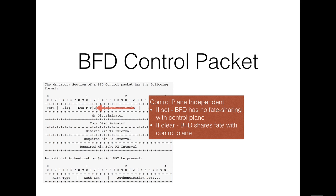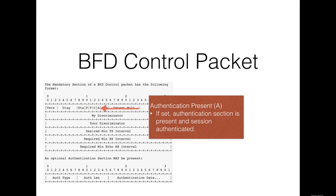The control plane independent bit (C) is set if the transmitting system's BFD implementation does not share fate with or is not tied to the control plane — that is, if there is a problem with the control plane, the BFD function is not affected. If the field is clear, any failure in the control plane causes the BFD session to switch to the down state. If the authentication present field is set, it means the authentication section is present in the BFD control packet and the session is to be authenticated.